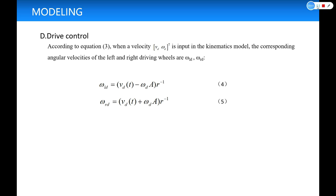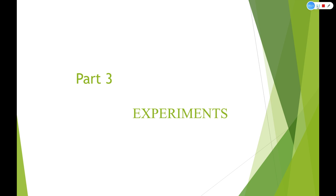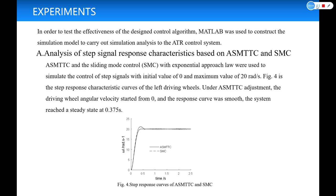And then, I will describe the experiments. When a velocity with dt is input in a kinematic model, the corresponding angular velocities of the left and the right driving wheels are wld, wrd. In order to test the effectiveness of the designed control algorithm, MATLAB was used to construct the simulation model to carry out the simulation analysis to the ATR control system.